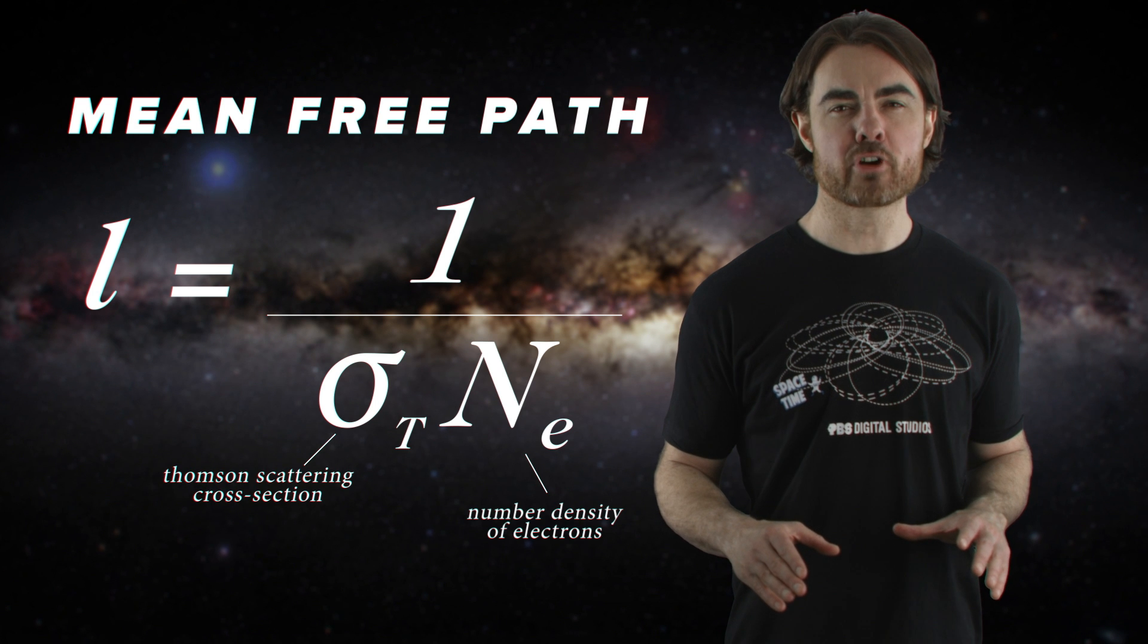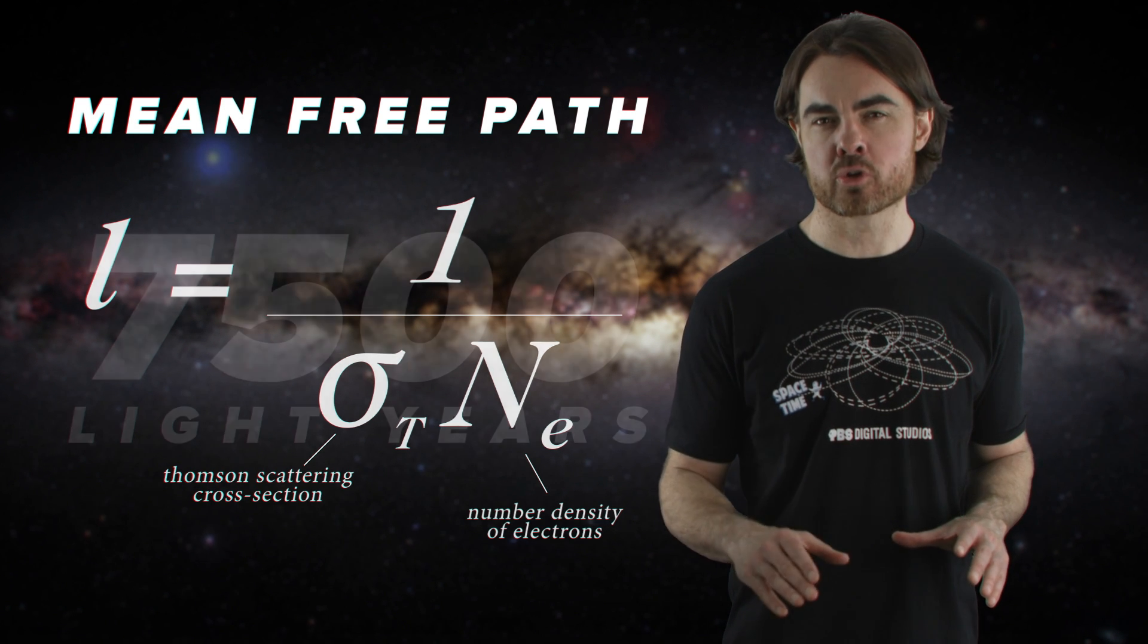Now, we simplified here because some of those electron targets are going to overlap. But it turns out that we still get the right answer. Some photons travel further, some not so far. But this number is the mean free path. Plug our numbers into this equation, and we get a mean free path of around 7,500 light years.